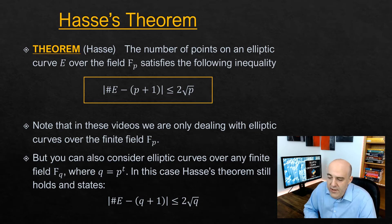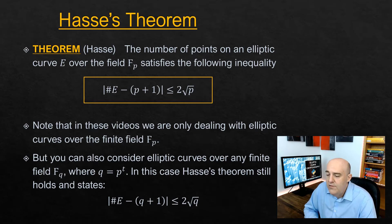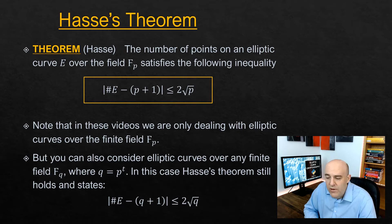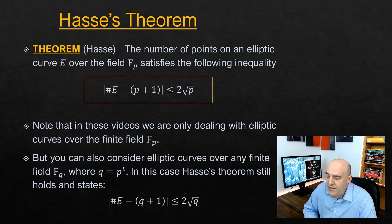What does this say? When we write the absolute value of a difference, like |X - Y|, it means the distance between X and Y without regard to sign. So when we write the absolute value of the number of points in E minus (P+1), that's a statement about the distance between those two quantities. And what the theorem says is that it's bounded above by 2√P — the number of points in E and P+1 are no more than 2√P apart.